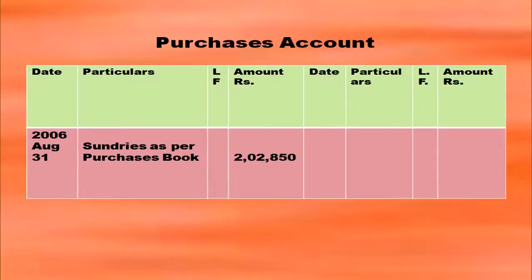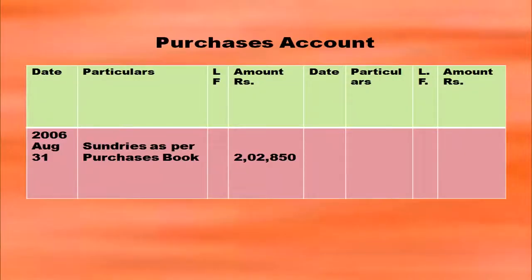Then you have to open purchases account. We have already opened suppliers' accounts. One more account is to be opened that is the purchases account. In the purchases account you will post on the debit side — purchases account will always have a debit balance. You have to write sundries as per purchases book in the particulars column and the total purchases amount in the amount column. The date will be the last date of that month, August 31st.